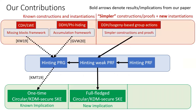We then show a simpler construction strategy for hinting PRGs and hinting weak PRFs from the standard DDH assumption. Our constructions are more direct and allow simpler proofs, while also yielding new instantiations from plausibly quantum-safe assumptions over isogeny-based group actions.